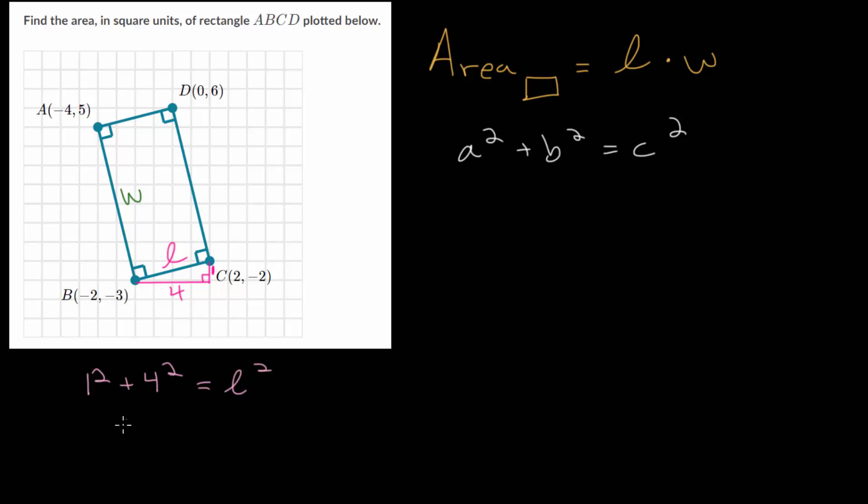So if we plug all those in we get that one squared plus four squared is equal to L squared. So one squared is one, four squared is 16. So we get one plus 16 is L squared. So that's 17. And to find L we're going to take a square root of each side. So L is the square root of 17.